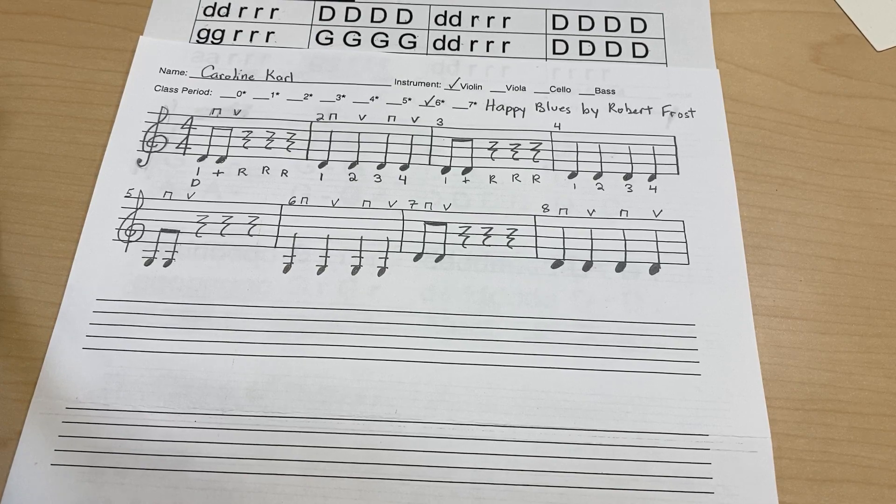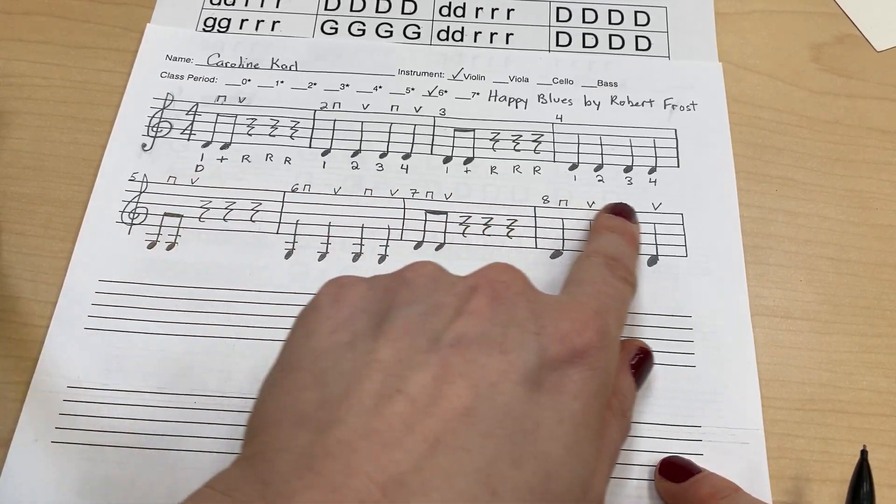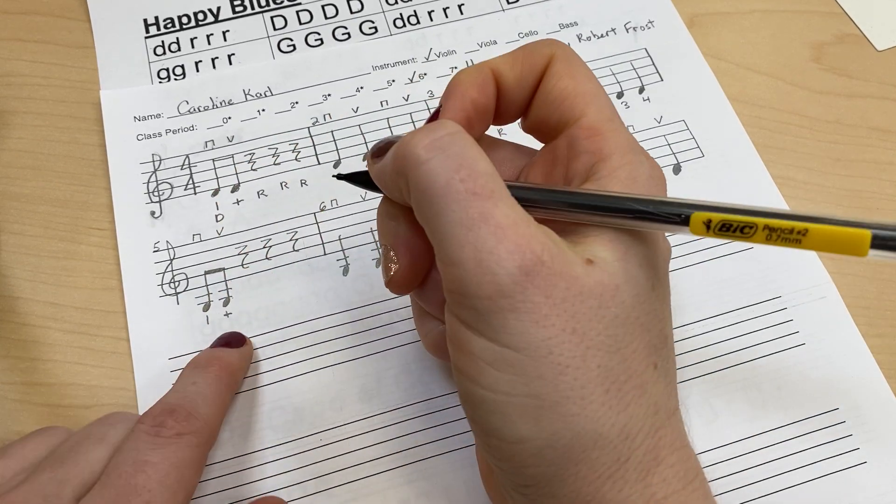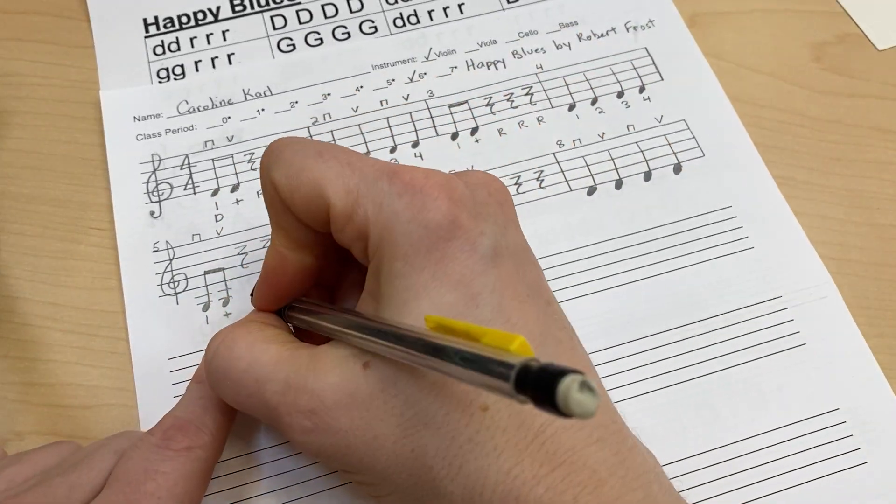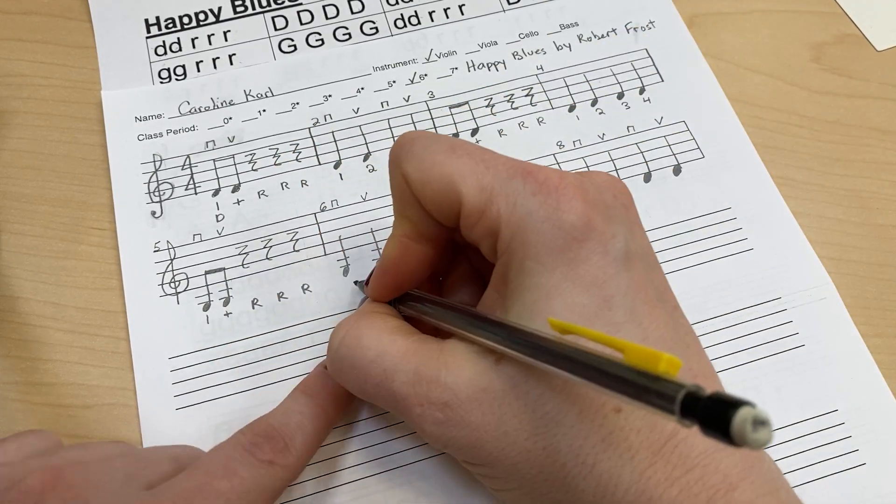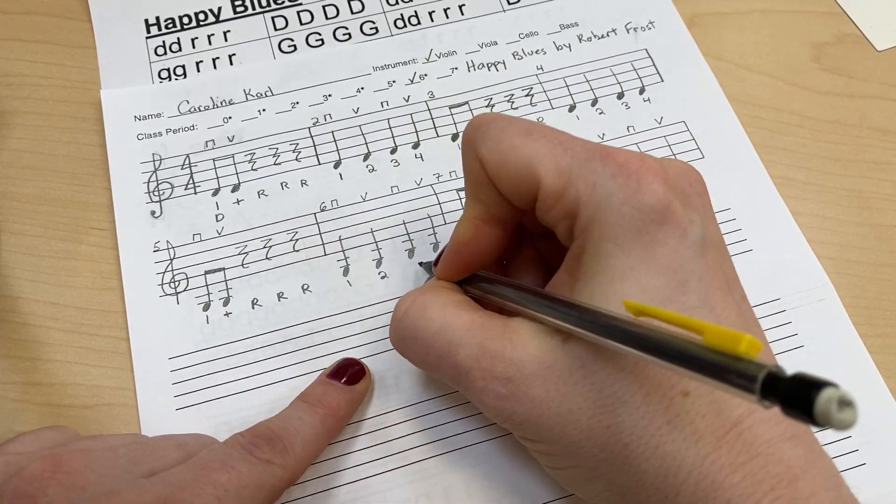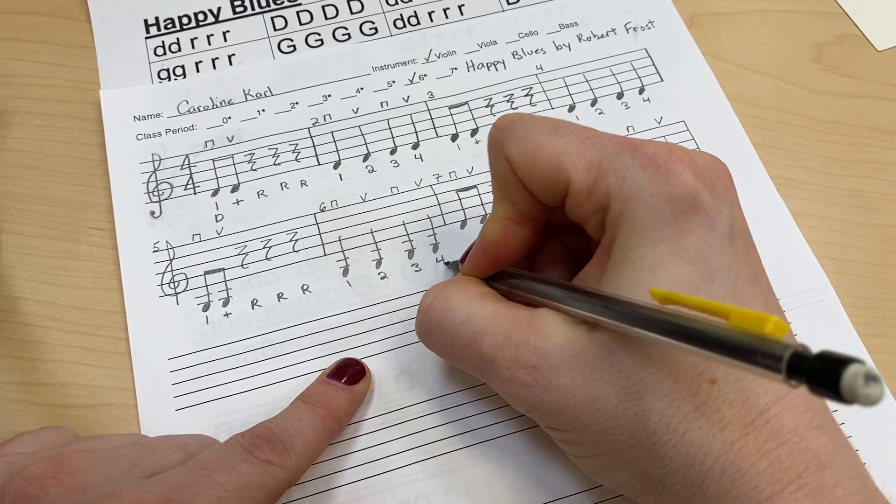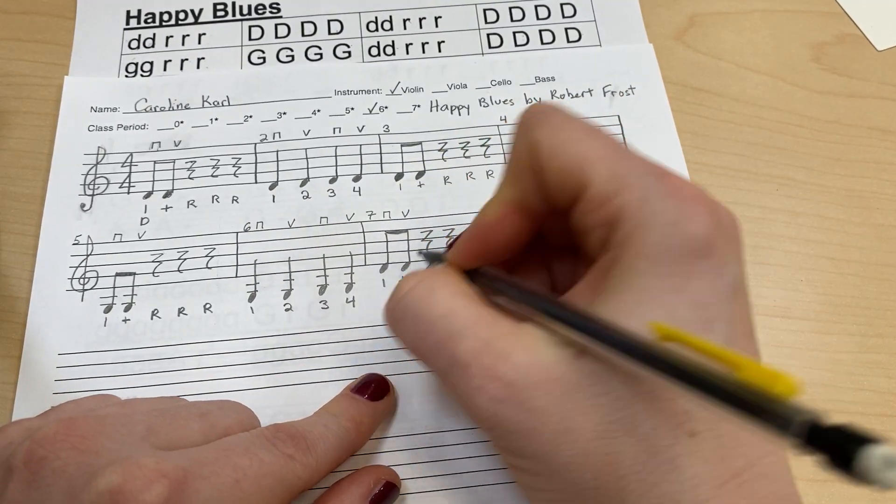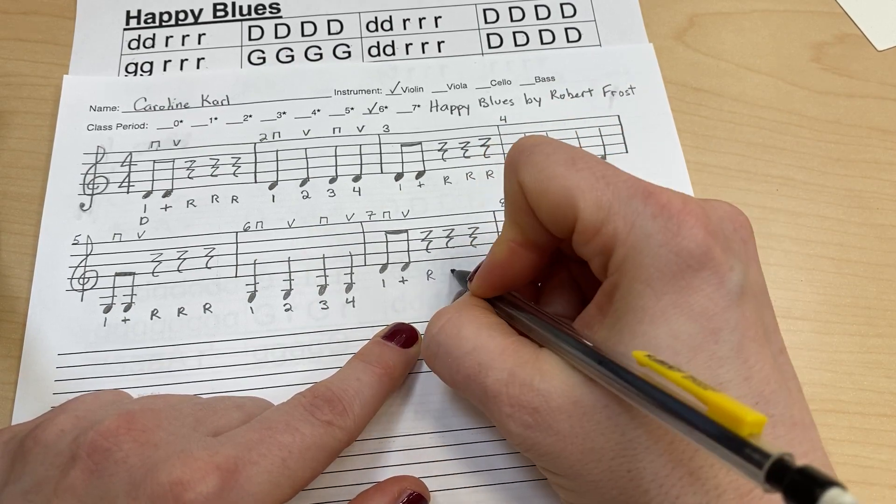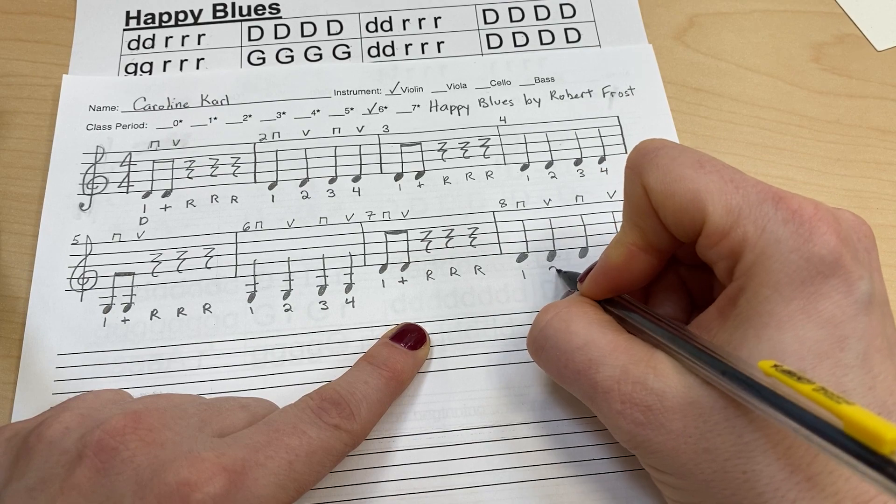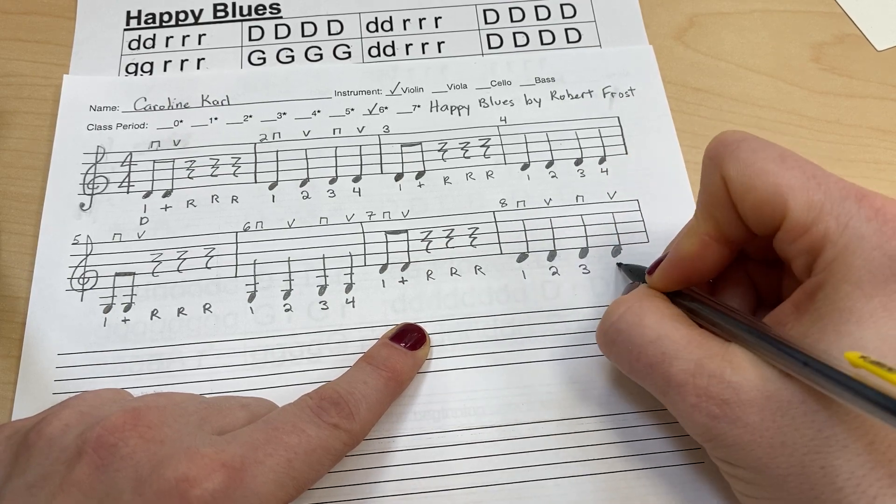And now the only thing left is to put in the counting. So I'm going to write in one and, use a plus sign for and, and then put in capital R for rests like this. And then do one, two, three, four. And then here I'm going to do again, one and, rest, rest, rest, one, two, three, four.